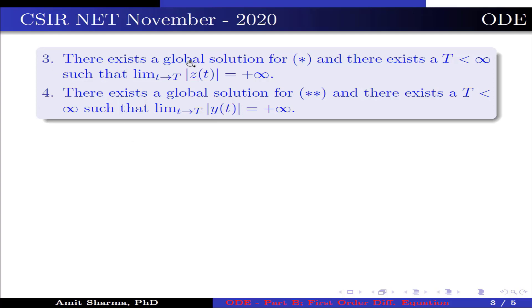Option 3: there exists a global solution for (*) and there exists a T < ∞ such that lim_{t→T} |z(t)| = +∞.